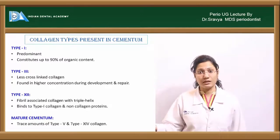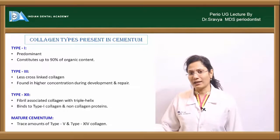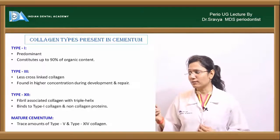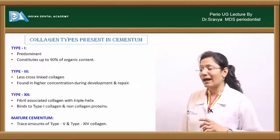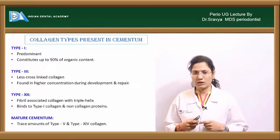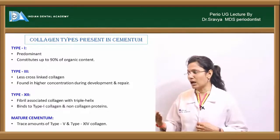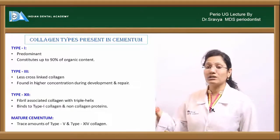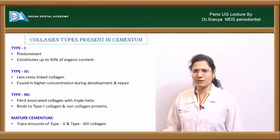Type 1 collagen is predominant at 90% of the organic component. Type 3 is a cross-linking collagen found in higher concentration during development and repair. Type 12 is a triple-helix collagen bound to type 1 collagen. In matured cementum, trace amounts of type 5 and type 14 are also seen.